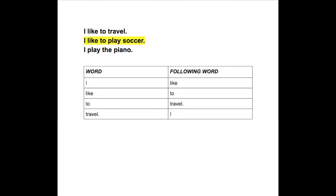Now when we read the next sentence of training data into the computer, you'll notice there are some words we've already dealt with. In that case, we simply store them in the list where they already exist. For example, the word 'I' is already followed by the word 'like' from our first sentence of training data, so we have the word 'like' twice in that list. The word 'like' is also followed by the word 'to' again, so we have the word 'to' twice in that list.